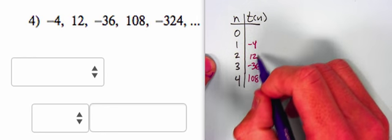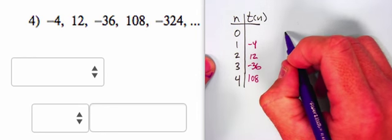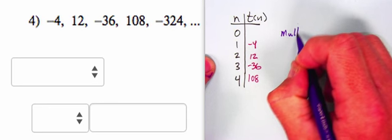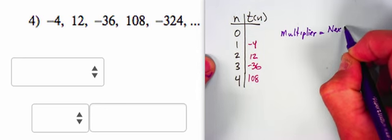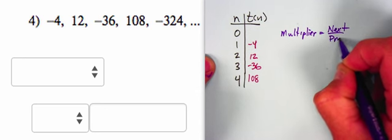Let's try multiplying. If I were trying to figure out what the multiplier is, remember this. To find the multiplier, you have to take the next divided by the previous. So take next divided by the previous.